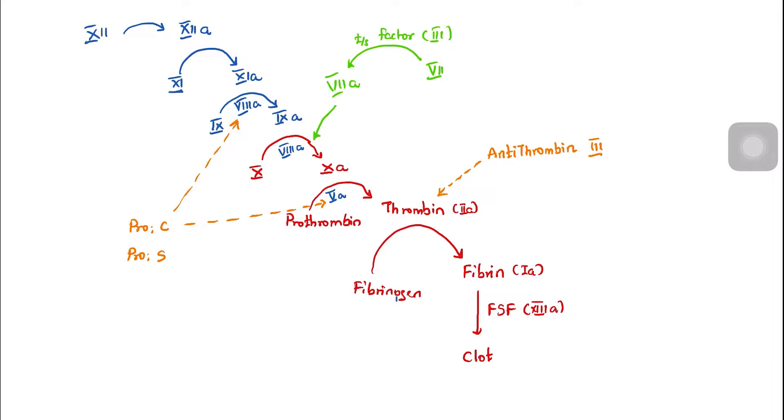The clotting pathway has naturally occurring anticoagulants: protein C and protein S, antithrombin. Protein C inhibits factor 5 and factor 8. Antithrombin will not break down the clotting, and thrombin may cause thromboembolism if there's a problem.